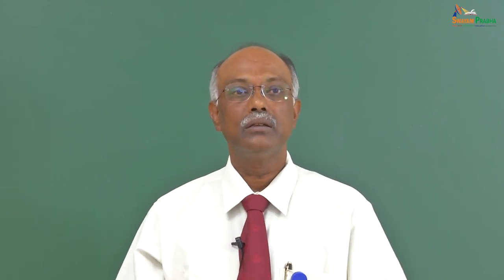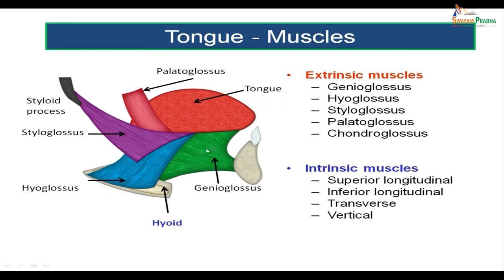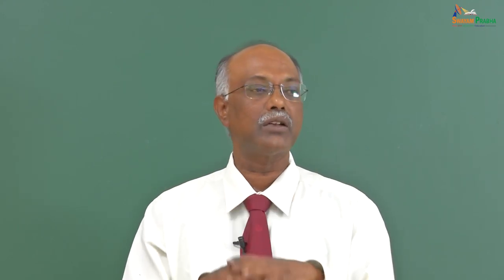The extrinsic muscles include the genioglossus — the bulk of the tongue is formed by this muscle, which extends from the mandible into the tongue. The hyoglossus extends from the hyoid bone and inserts into the sides of the tongue. The palatoglossus originates from the palatine aponeurosis and inserts into the posterior part and sides of the tongue. The styloglossus extends from the styloid process and inserts into the sides of the tongue. Additionally, there is a small muscle called chondroglossus, which is a detached part of hyoglossus and also extends from the hyoid bone to the sides of the tongue.